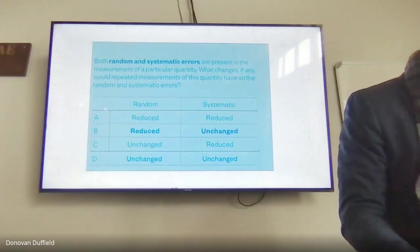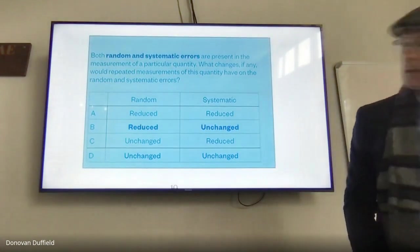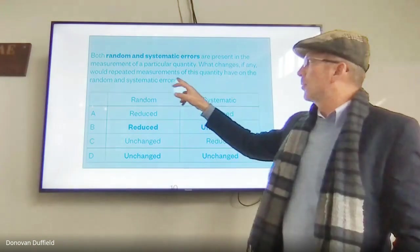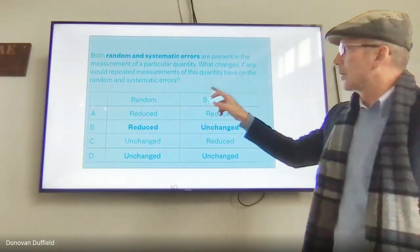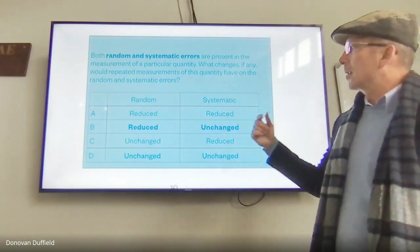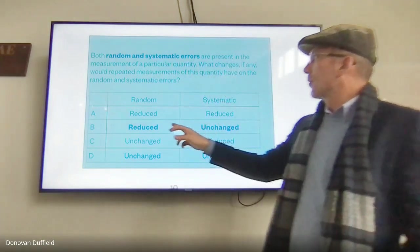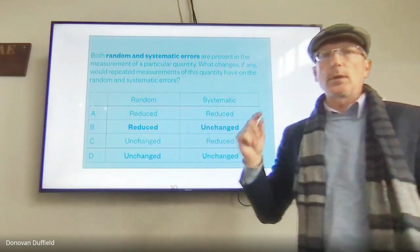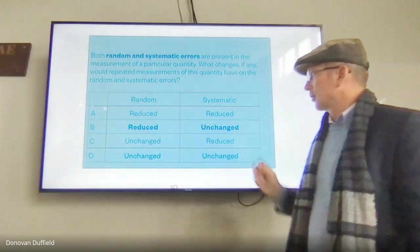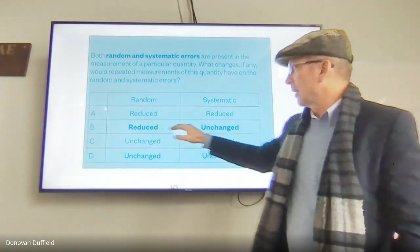With both random and systematic errors present: if you repeat measurements, random errors will be reduced — especially if you average them out. But systematic errors remain unchanged. That is the correct understanding of what repeating measurements achieves.